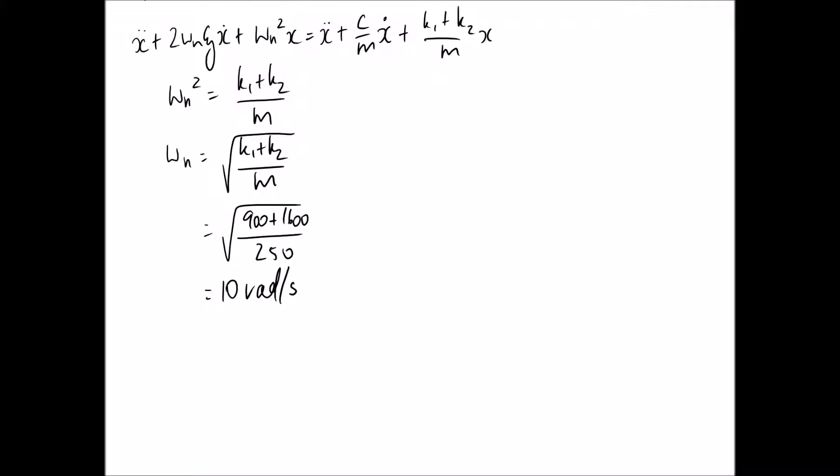And that means that I can find out that my natural frequency is 10 radians per second. So now what I need to do is find my damping ratio, and I can use this part, the x dot part. So 2 omega n zeta equals c on m.